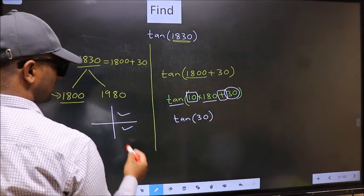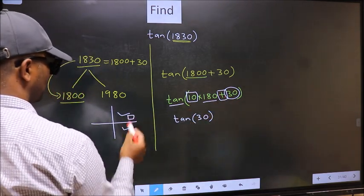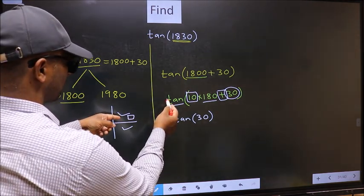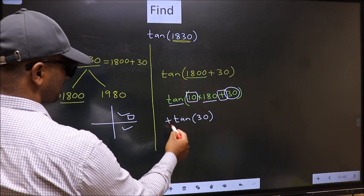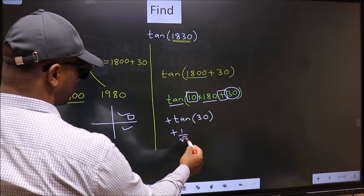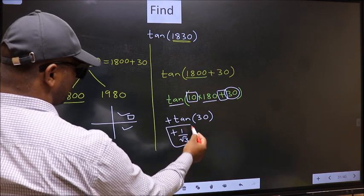That means the angle lies in the first quadrant. And in the first quadrant, tan is positive. So we should put plus. So plus tan 30 is 1 by root 3. This is our answer.